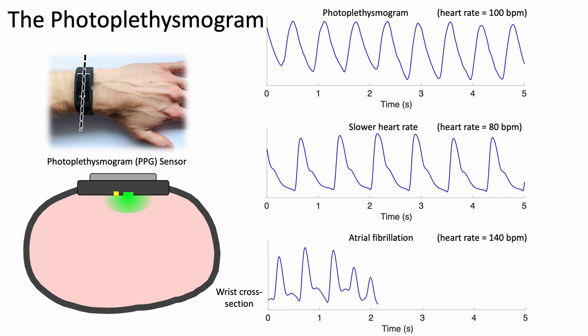In arrhythmias such as atrial fibrillation we observe irregular pulse waves where both the inter-beat intervals and the pulse wave amplitudes vary from one beat to the next.